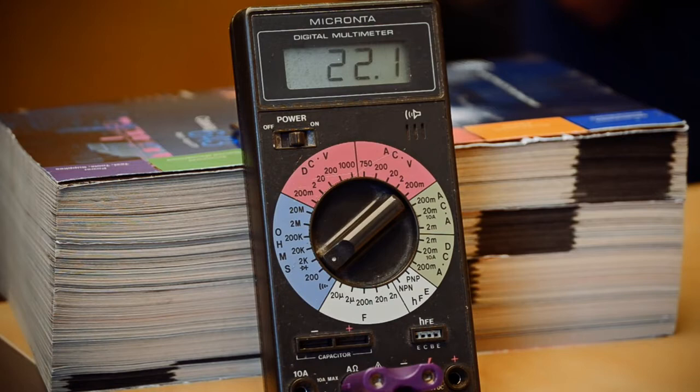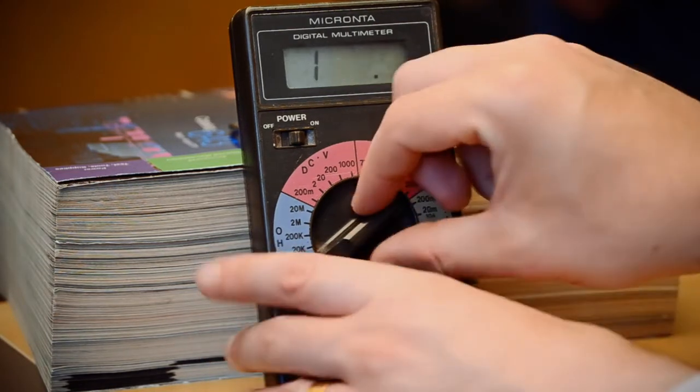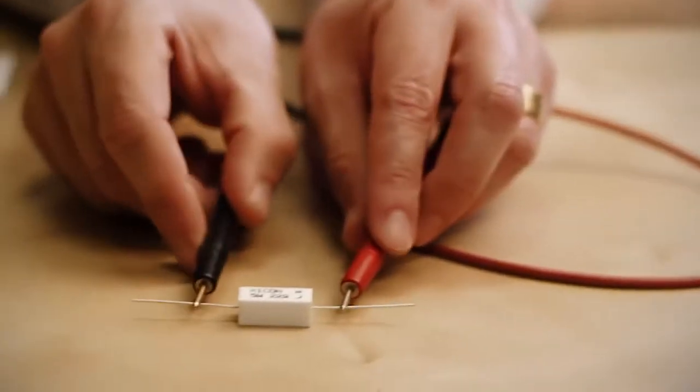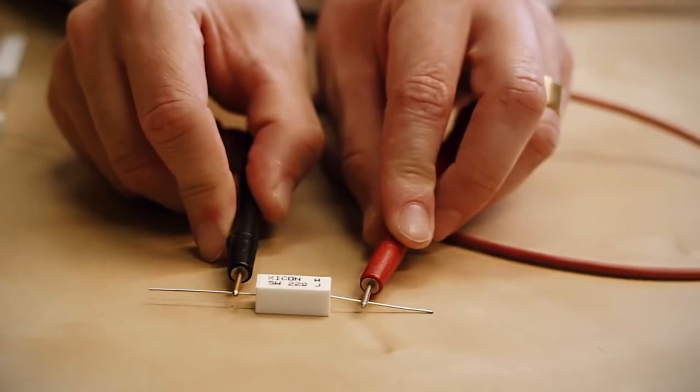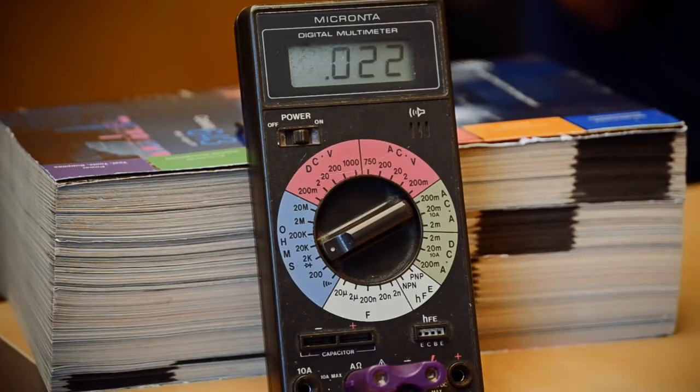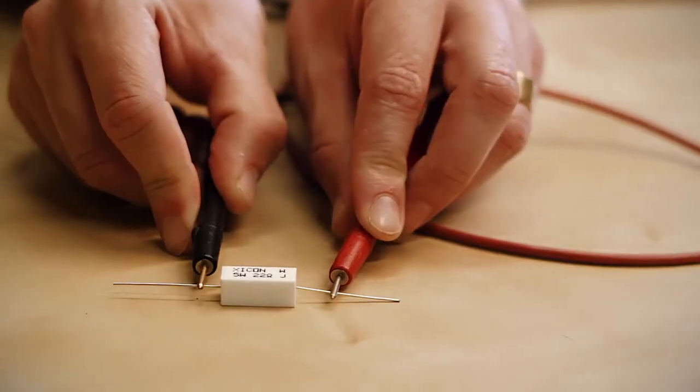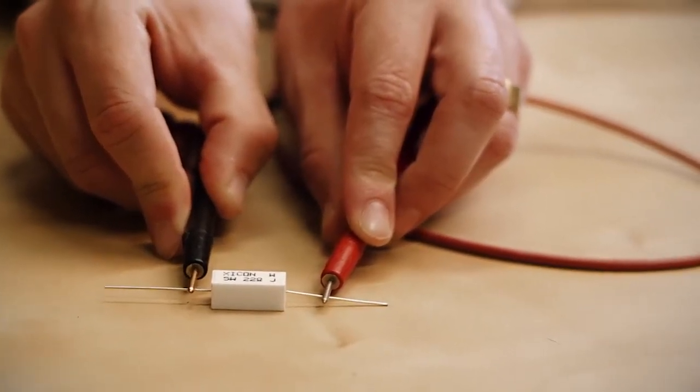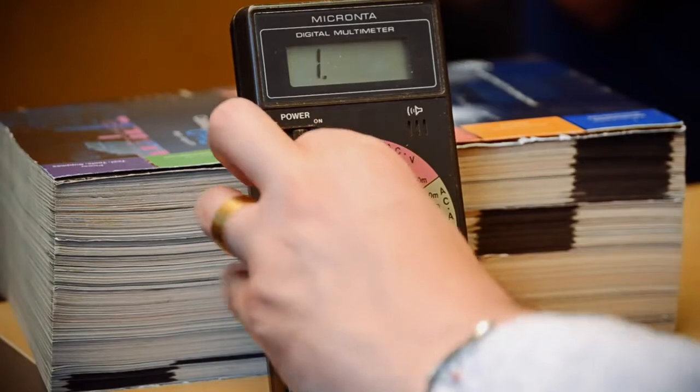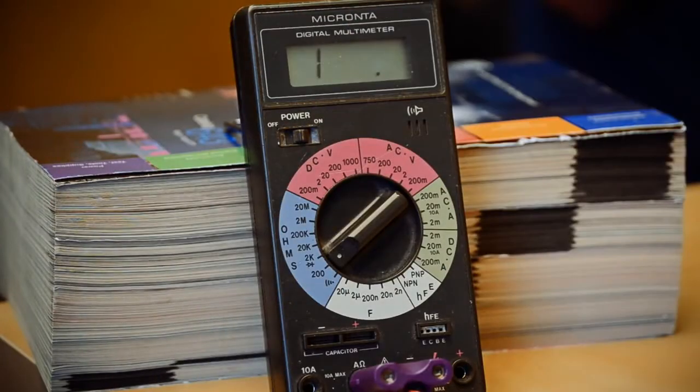You can also read it on the 2K scale if you want to. However, when you do that, you're going to see 0.022 because you're seeing 0.022 kiloohms, not ohms. It's the same measurement, but it's measured on a different scale.